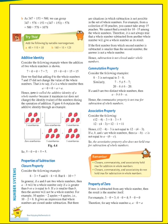Additive identity. Take out page number 58 in your math reader. Consider the following examples where the addition of two whole numbers is shown. Seven plus zero equals zero plus seven, which equals seven. And another example: 15 plus zero equals zero plus 15, which equals 15.